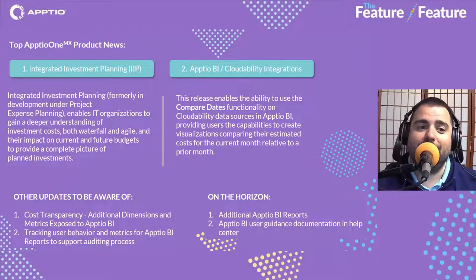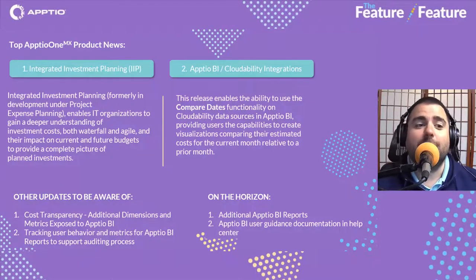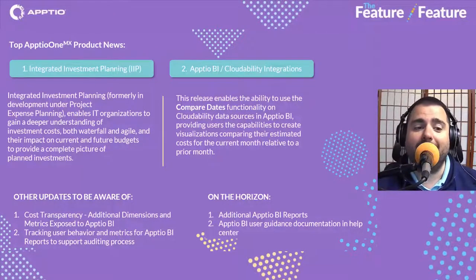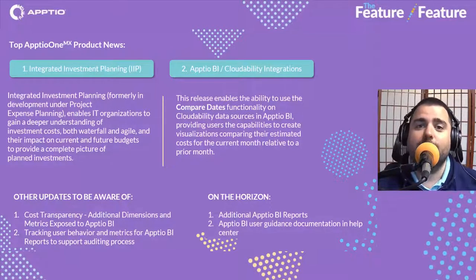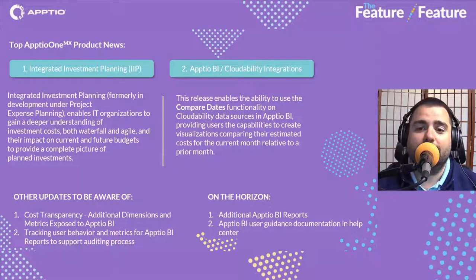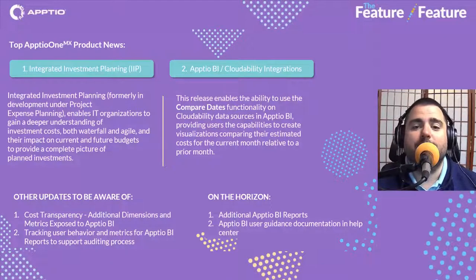Starting with Integrated Investment Planning — this enables IT organizations to gain a deeper understanding of investment costs for waterfall and agile, and provides a more complete picture of planned investments for your development processes in your organization. For Aptio BI, we have an update for some of the Cloudability integrations.